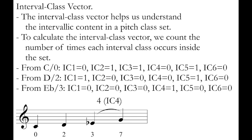Next, I'll count intervals beginning with E-flat — pitch class 3. I've already calculated 0 to 3 starting from C, and D to E-flat starting from D, so there's only one interval left: E-flat up to G. Pitch class 3 to pitch class 7 — subtract 3 from 7 to get 4 — which is interval class 4. I don't need to calculate any intervals from G since I've already counted C to G, D to G, and E-flat to G, so I've now counted all the interval classes that exist in this pitch class set.